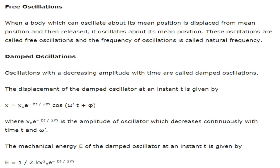Free oscillations. When a body which can oscillate about its mean position is displaced from mean position and then it is released, it oscillates about the mean position. These oscillations are called free oscillations and the frequency of oscillation is known as natural frequency.